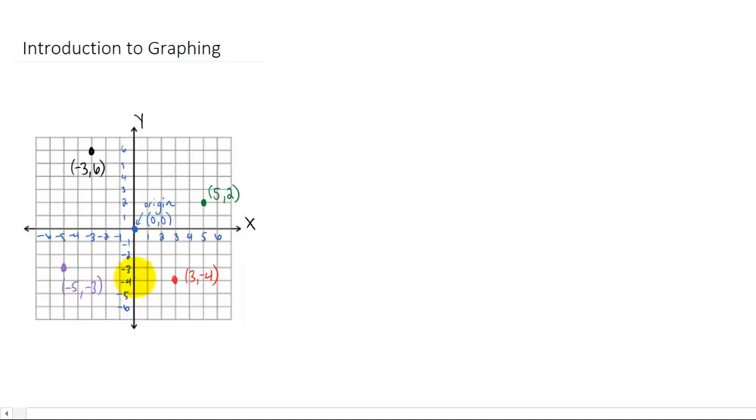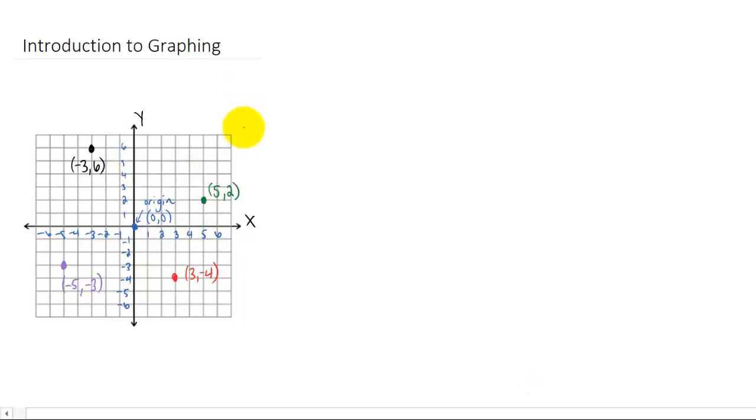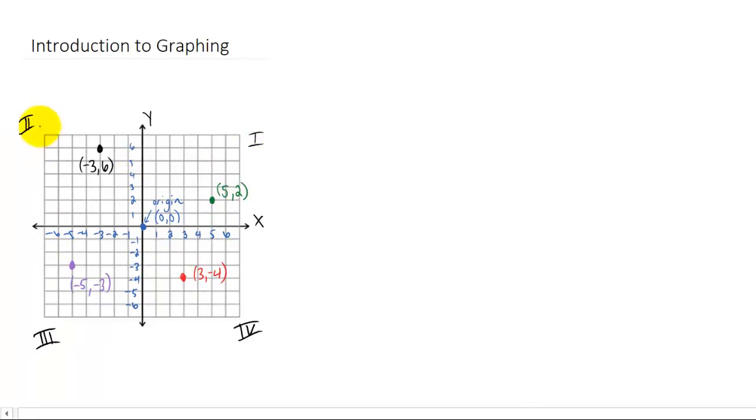You'll notice that an x and a y-axis split up this plane into four quadrants. We number these quadrants. This is quadrant 1, over here is quadrant 2, quadrant 3, and quadrant 4. And this is one of those cases where you actually get to use Roman numerals. So enjoy it.